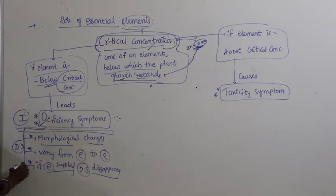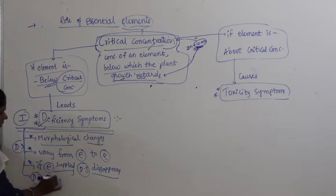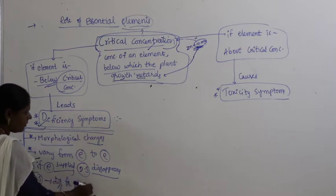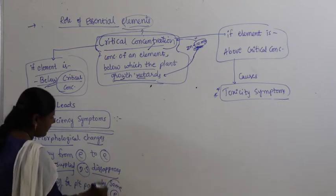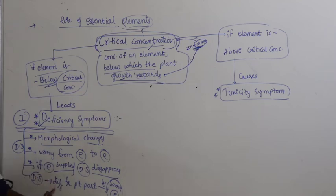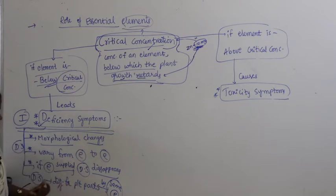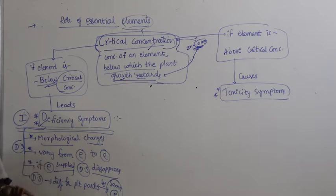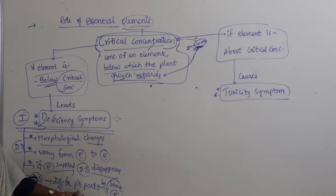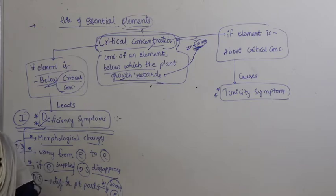Deficiency symptoms are also different for different plant parts by the same element. For example, the deficiency symptom shown by zinc on the leaf is different from zinc deficiency shown on the root, which is again different from its effect on the shoot. So every plant part may show different deficiency symptoms from the same element.